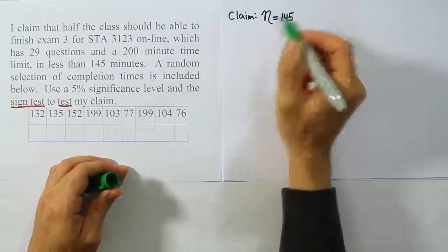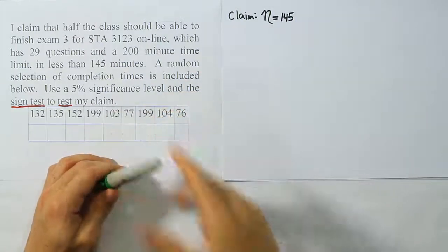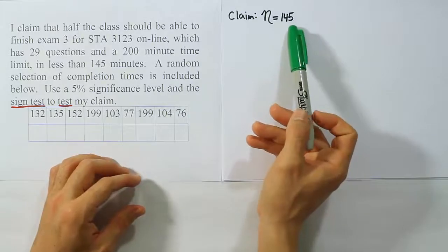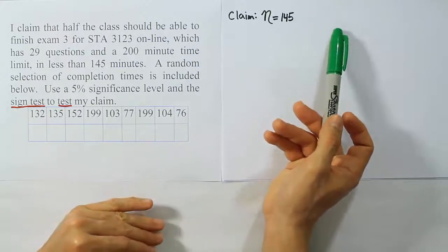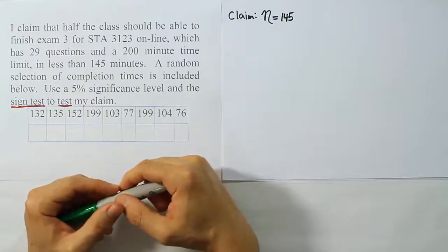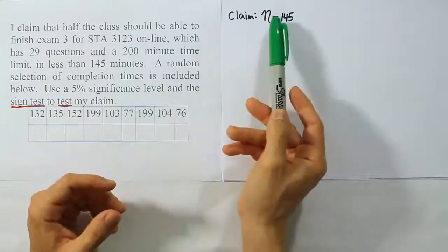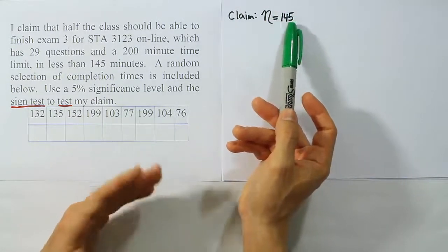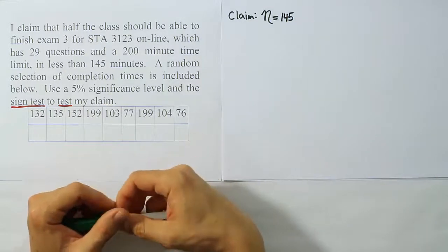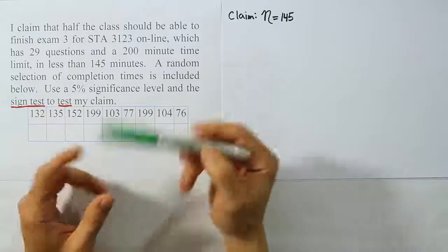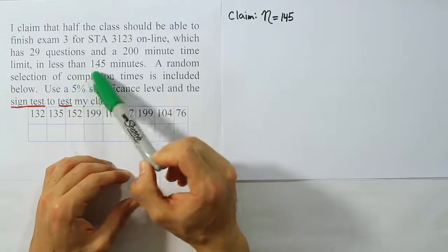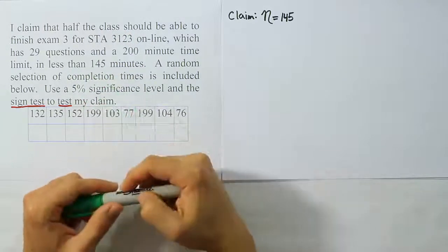Why is that true? Well, if you think about it from this point of view, we're saying that if the median is 145, it means half finish with longer amount of time, half finish with less amount of time. That's basically the idea of the procedure. So again, if the median is 145, it means that half will finish with less time, half will finish with more time. So I'm taking that right from the statement here: I claim that half the class should be able to finish in less than 145 minutes.